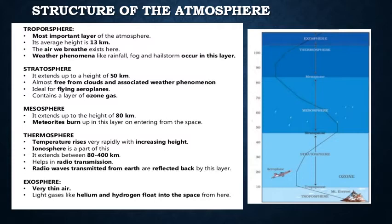Above the stratosphere is the mesosphere, the third layer of the atmosphere. It extends up to a height of 80 km. Meteoroids burn up in this layer upon entering from space.